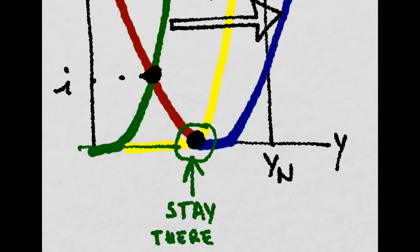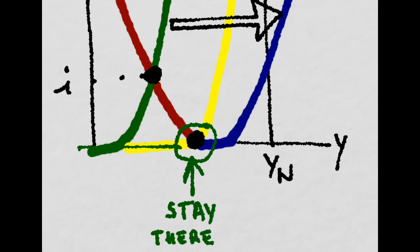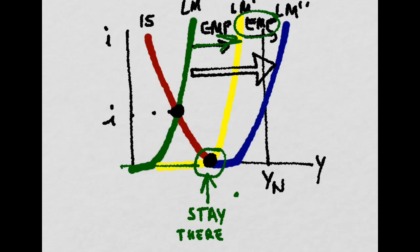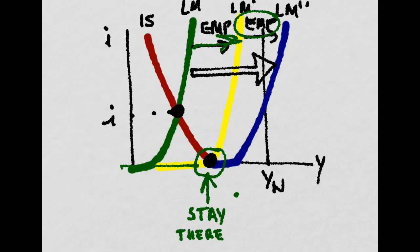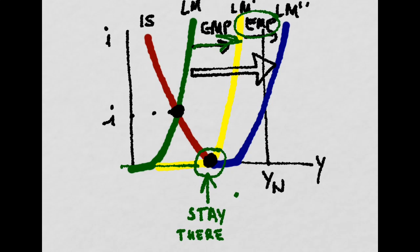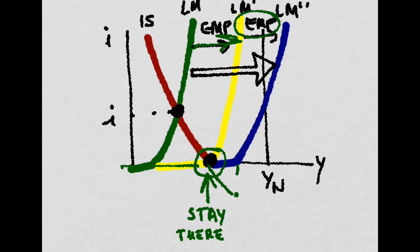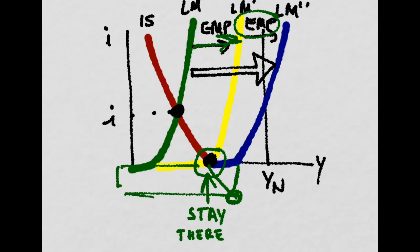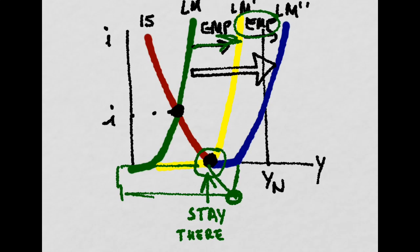If the IS is here, even if the government pushes the LM further down with another expansionary monetary policy, the LM and the IS cannot meet here because that would be with a negative interest rate, and that is not possible. So the economy will stay right here.